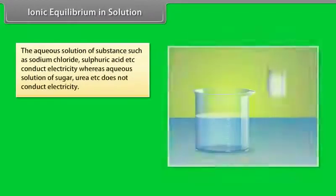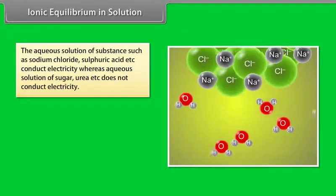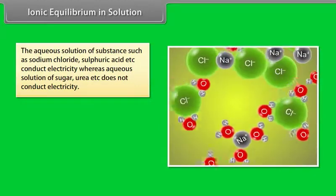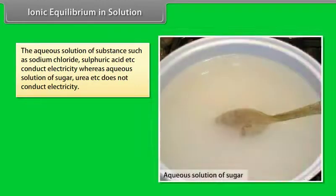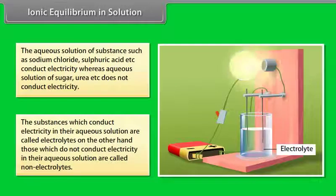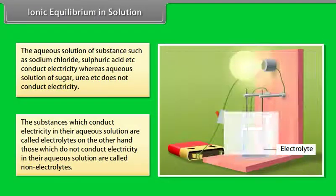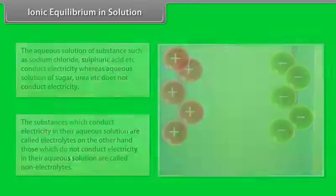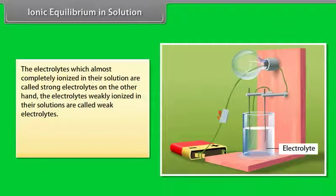Ionic equilibrium in solution: The aqueous solution of substances such as sodium chloride and sulfuric acid conduct electricity, whereas aqueous solutions of sugar and urea do not. Substances which conduct electricity in their aqueous solution are called electrolytes, while those which do not are called non-electrolytes.